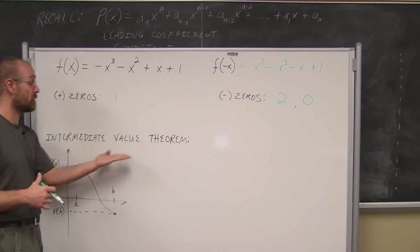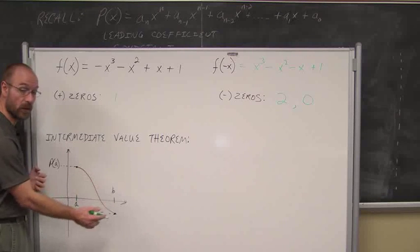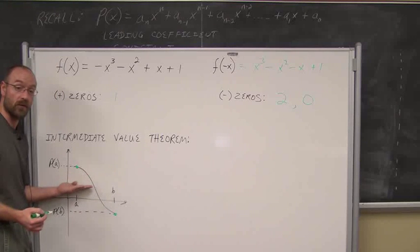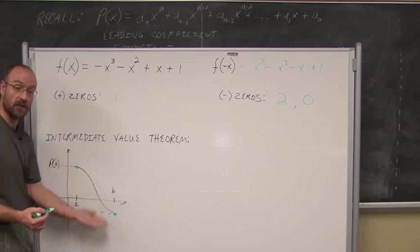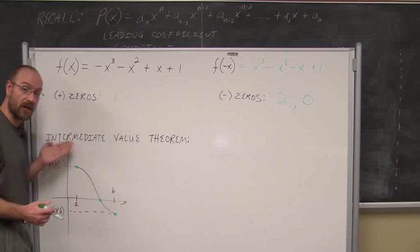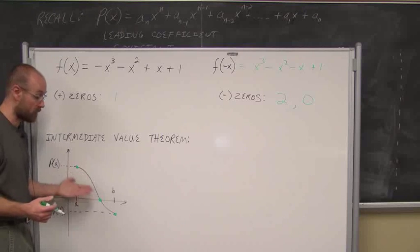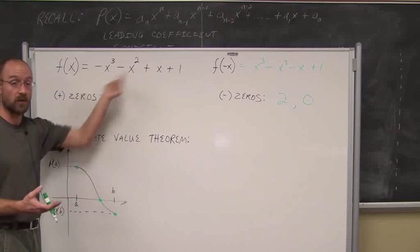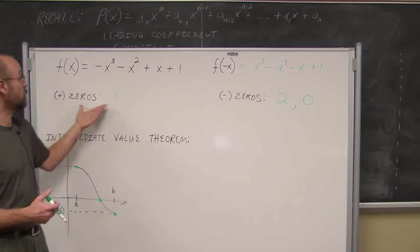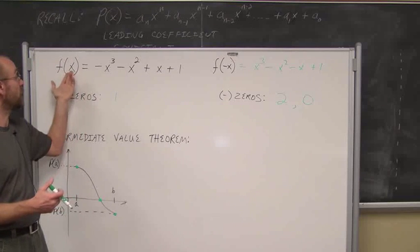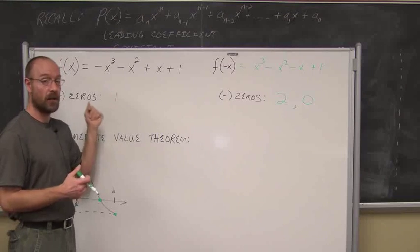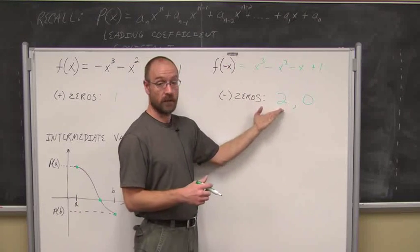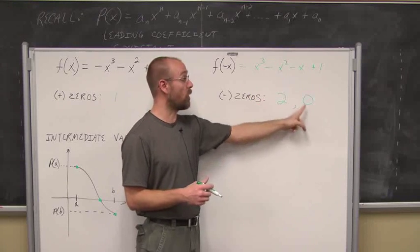Why do we look at these sign changes? It has to do with the Intermediate Value Theorem. If we have a polynomial and between some point A and some point B we have a change in signs — one's above the axis, one's below — there must be a zero at some point. The function has to cross the axis to go from positive to negative or from negative to positive. So if there's a change in signs, there must be a zero. We saw one sign change in the positive values, so there must be one real zero. With the negative input, there are two changes in sign, so there are two possible zeros or none.